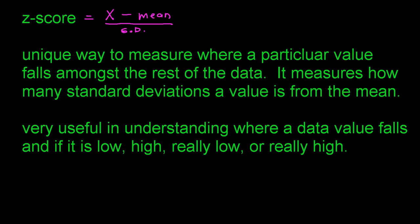A positive Z-score means you're above the mean; a negative Z-score means you're below the mean. The larger the Z-score, the more standard deviations you are from the mean. For example, if Kelly gets a Z-score of 2.5 on an English test, that means she was 2.5 standard deviations above the mean — well beyond the typical range of ±1 standard deviation — so she scored really, really well.